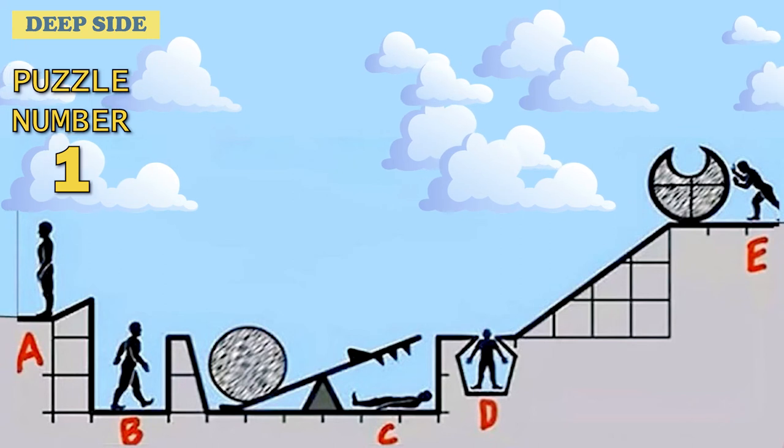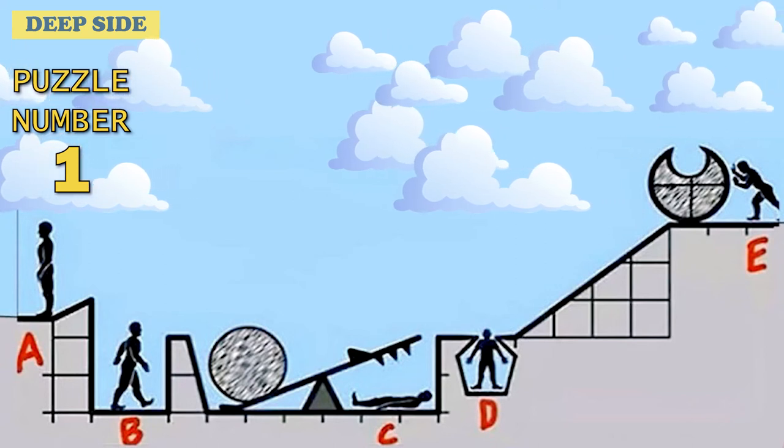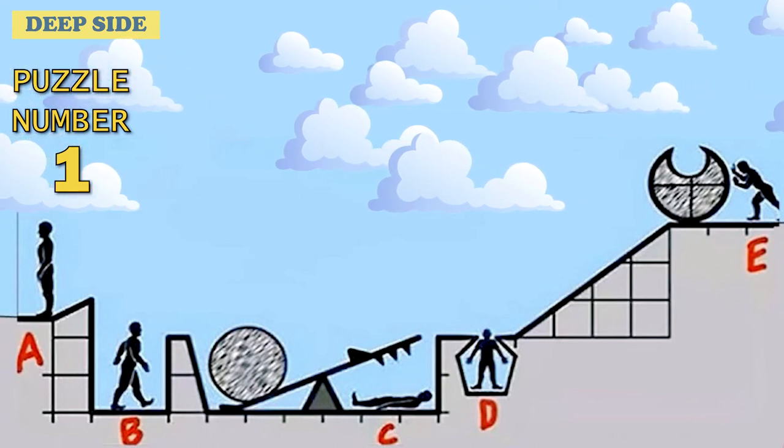And finally, puzzle number 1. The last one is easy. Look carefully at this picture. Who will be knocked off?